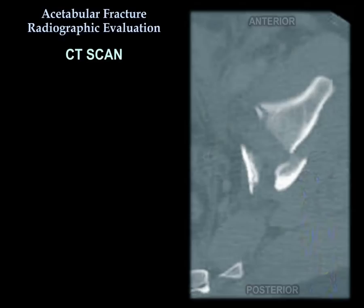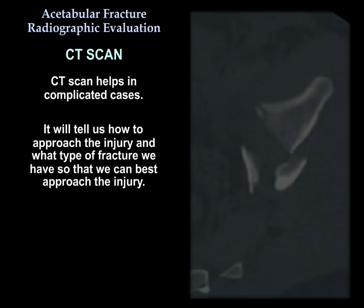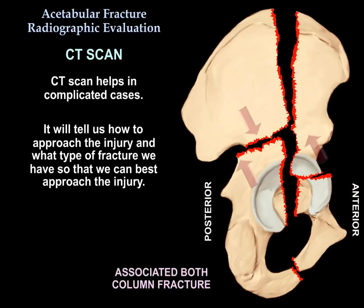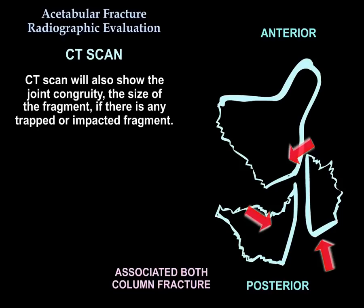CT scan helps in complicated cases. It will tell us how we approach the injury and what type of fracture we have, so we can best plan that approach. It will also show joint congruity, the size of the fragment, and whether there is any trapped or impacted fragment.